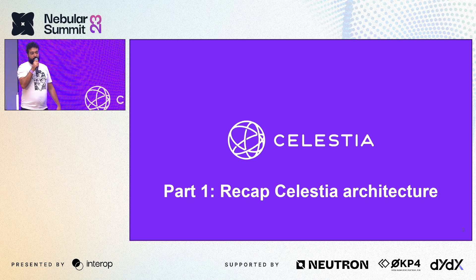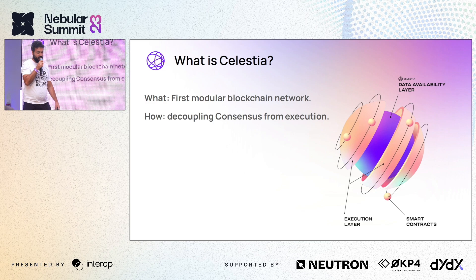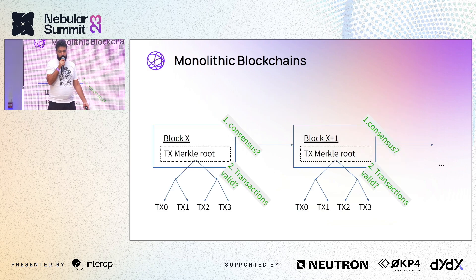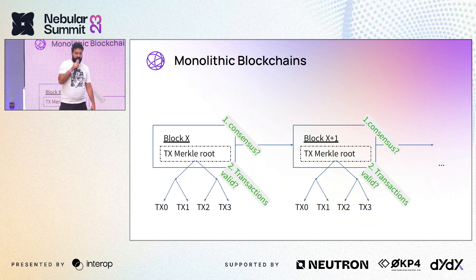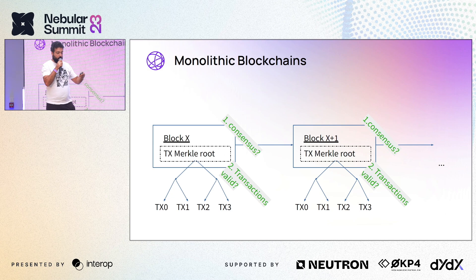For those who are not familiar with Celestia, I'll give a quick overview of what it is, how it works, and how we implemented it. From a very high level perspective, Celestia is the first modular blockchain network and the core idea is to decouple consensus from execution. Every chain today operates where clients validate both the header for consensus and all the transactions — that's true for all Cosmos chains as well. This is what we call a monolithic blockchain because it does everything.